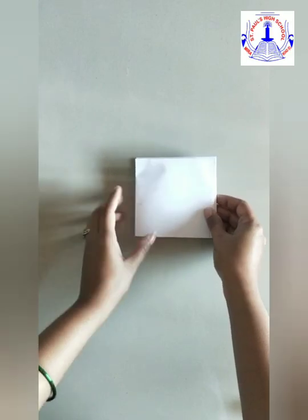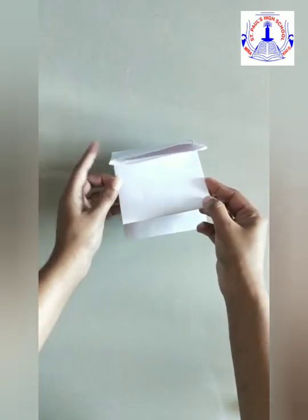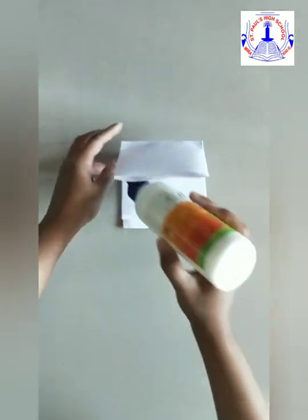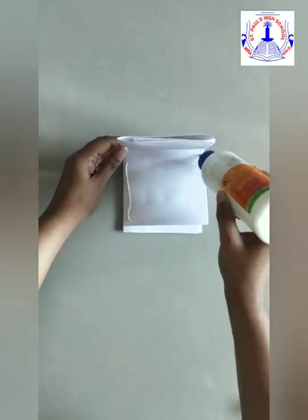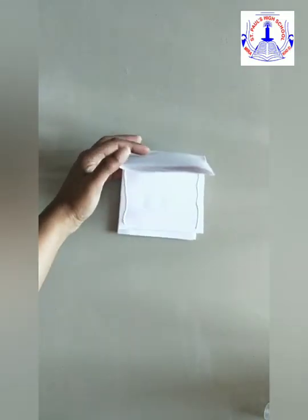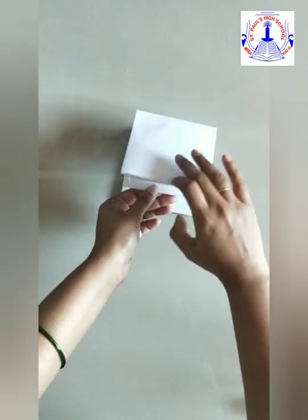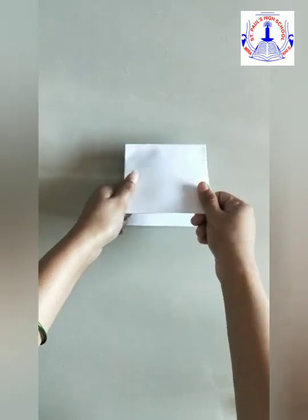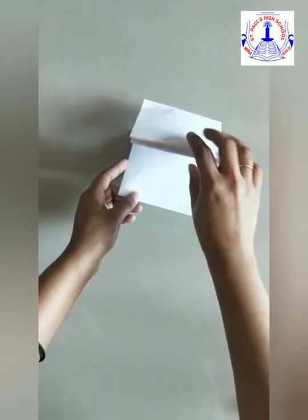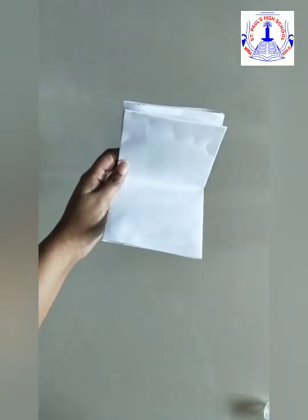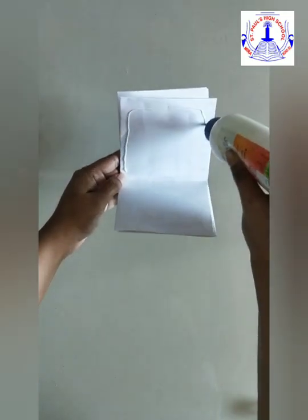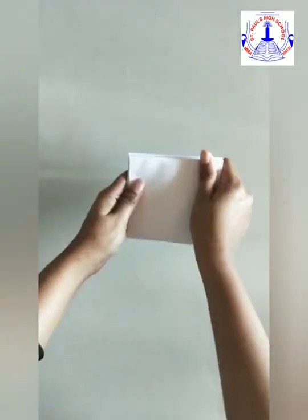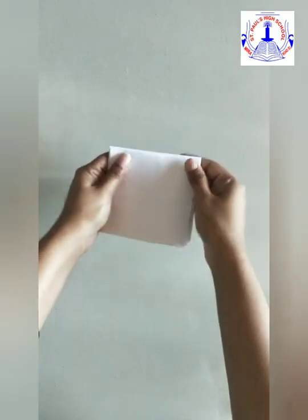So now what we are supposed to do, we are going to stick this part over here. Take a glue again and apply over here. We will stick only this portion. Apply the glue and stick it nicely.